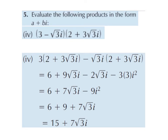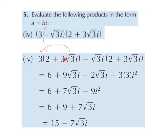For another example of a similar question: I'm going to crack open the first egg. The 3 comes down here, and the minus root 3i comes down here. The second egg, 2 plus 3 root 3i, stays as it is and is brought down into both sets of brackets. So 3 multiplied by 2 gives 6, and 3 multiplied by 3 root 3i gives 9 root 3i, because 3 times 3 is 9 and we keep the root 3i — just like 3 multiplied by 3x would give 9x.